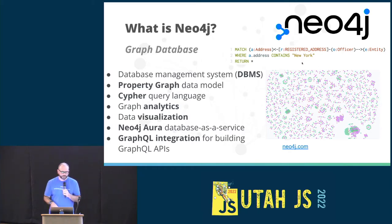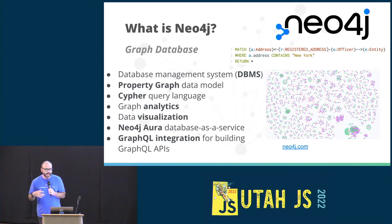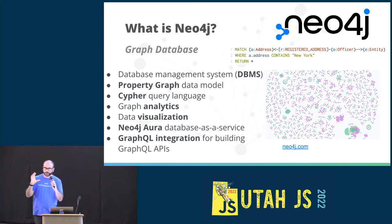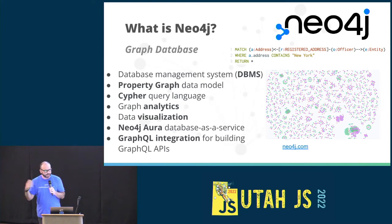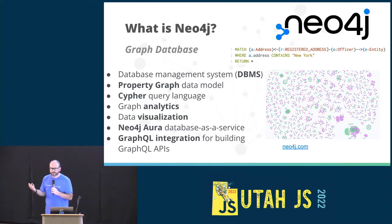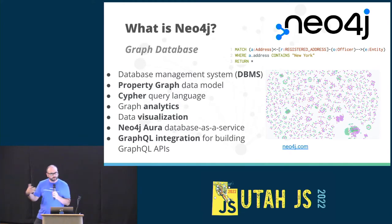This is an example of a Cypher query. You can think of it as kind of like SQL, but for graphs. Cypher is really all about pattern matching — we're drawing this ASCII art representation of a graph. Parentheses represent nodes, like 'address,' and arrows represent relationships connecting them. This query finds addresses in New York, officers connected to them, and legal entities connected to those officers. It comes from the Panama Papers investigation, which used Neo4j to make sense of offshore companies and influential people connected to them.